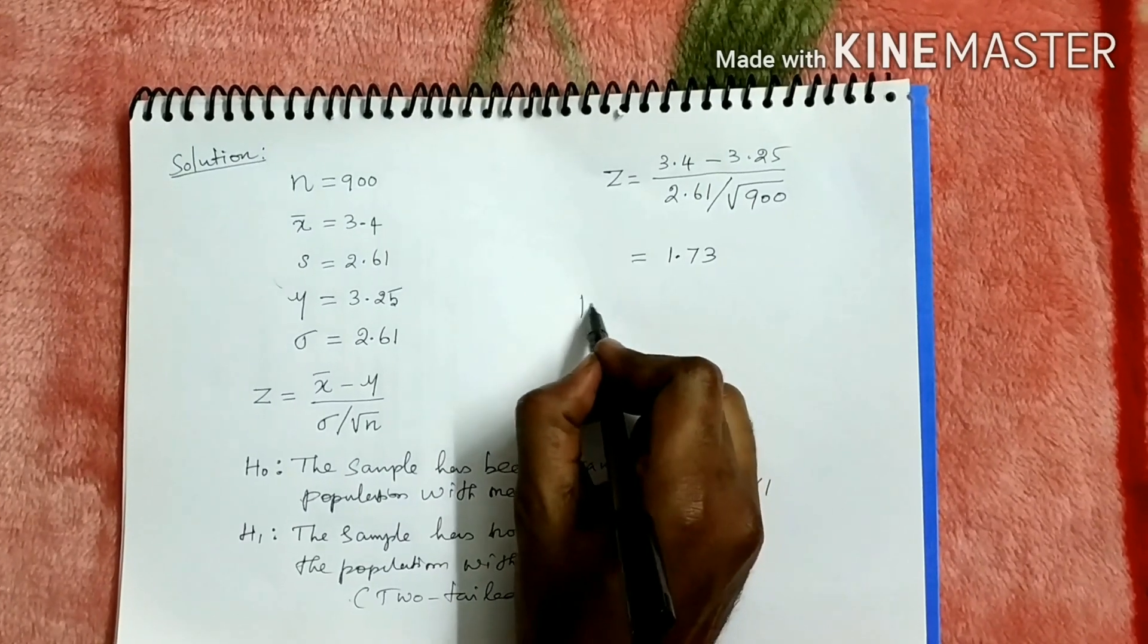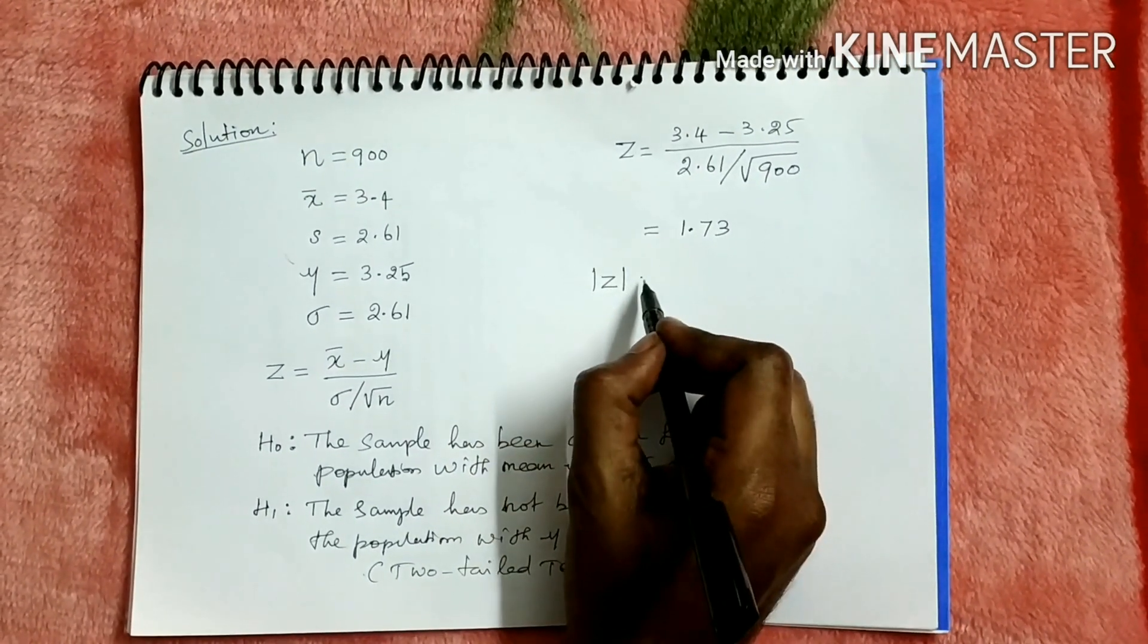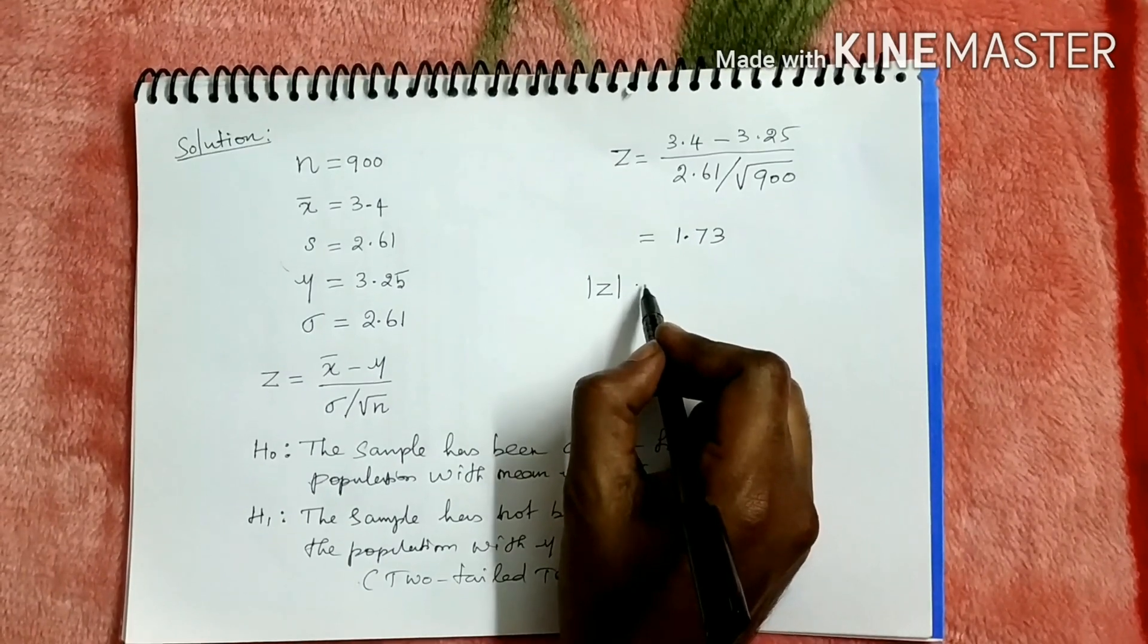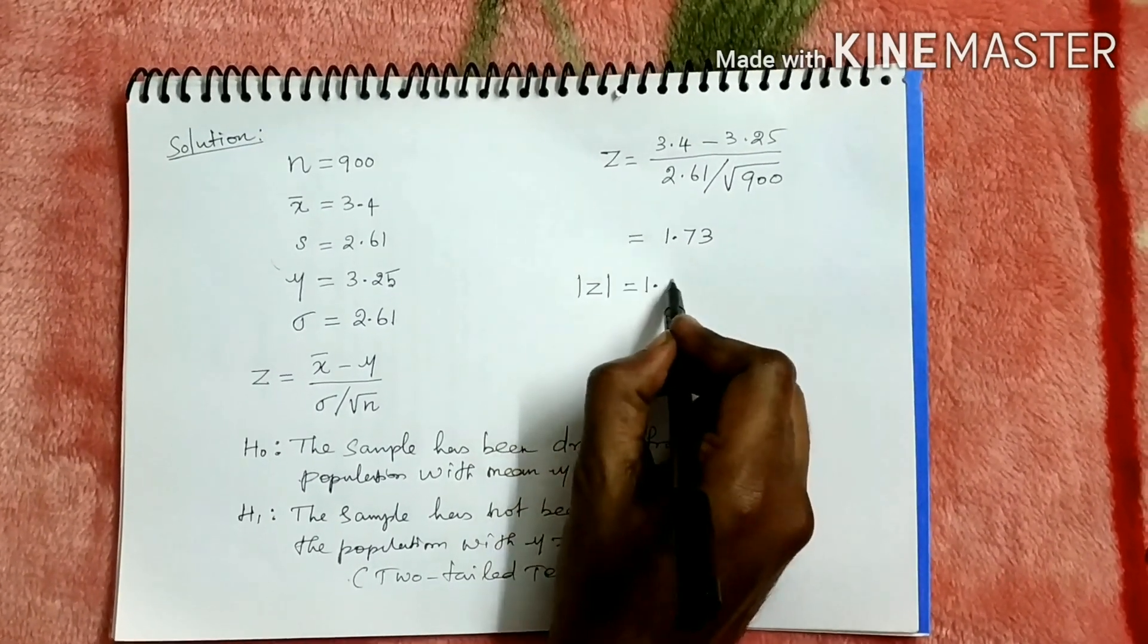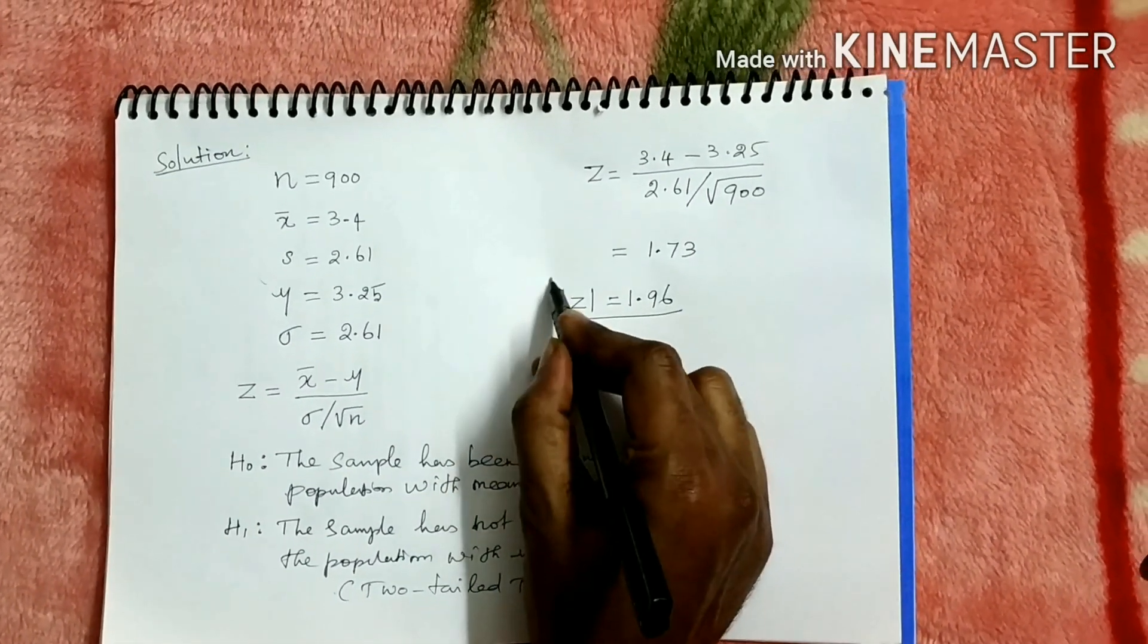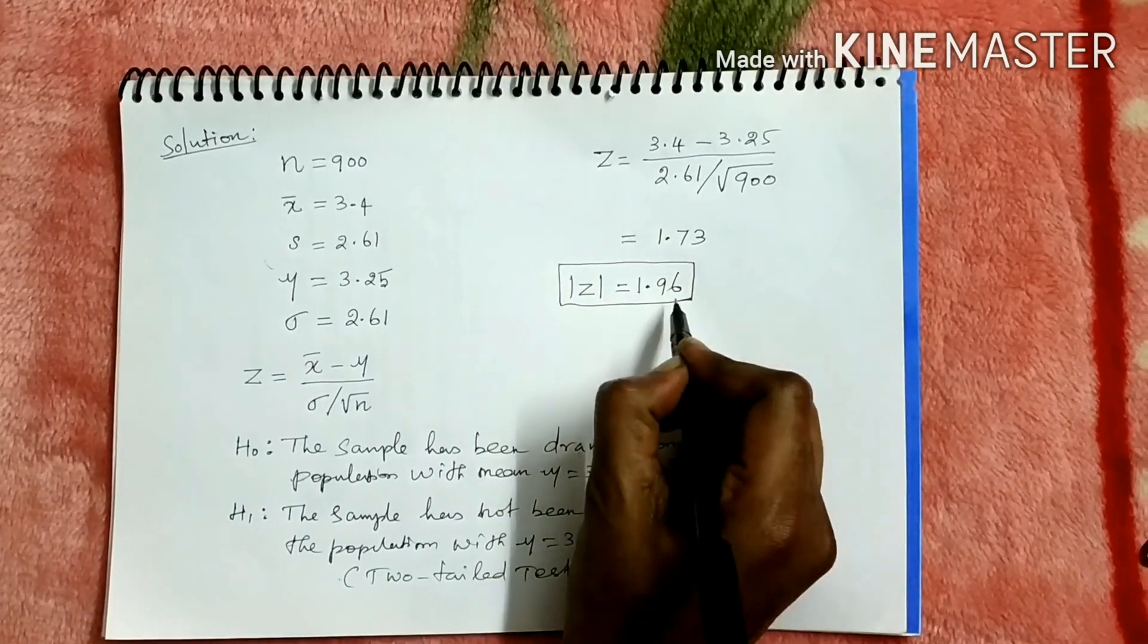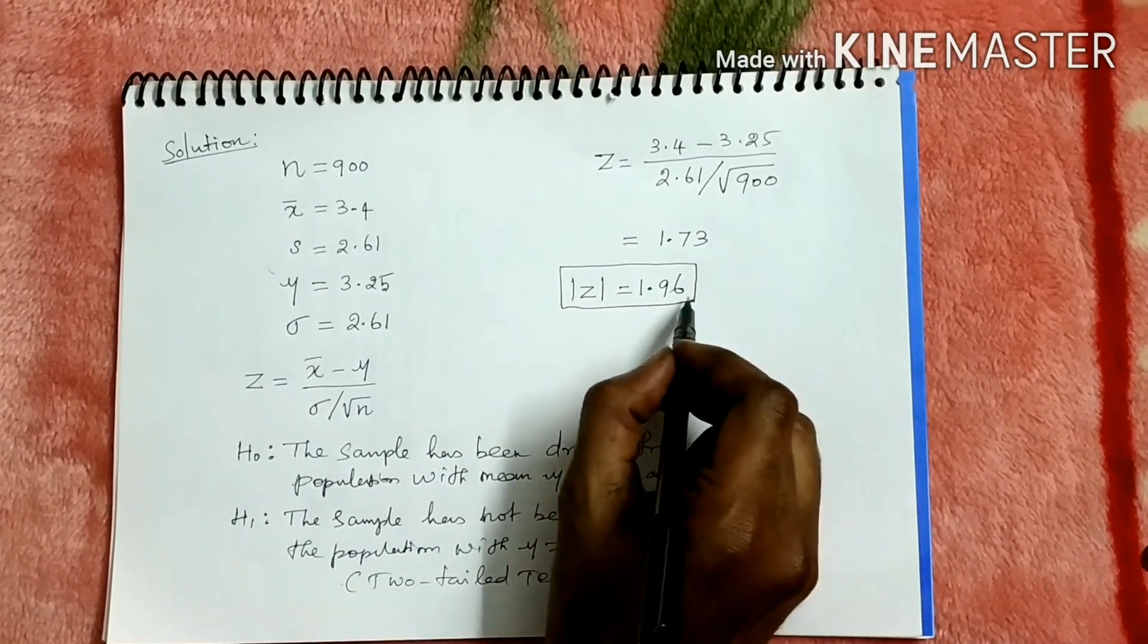The given value at 5% level of significance is 1.96. This is the table value for Z test at 5% level of significance for two tail test.